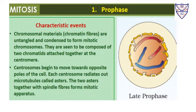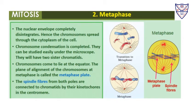During metaphase, the nuclear envelope completely disintegrates and chromosomes spread through the cell. Chromosome condensation is completed — they become shorter and can now be studied under the microscope as two sister chromatids. The chromosomes come to lie at the equator at the end of this phase. The plane of alignment of chromosomes at metaphase is called the metaphase plate. Spindle fibers from both poles are connected to the chromatids by their kinetochores at the centromere.